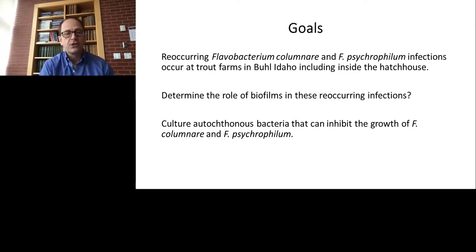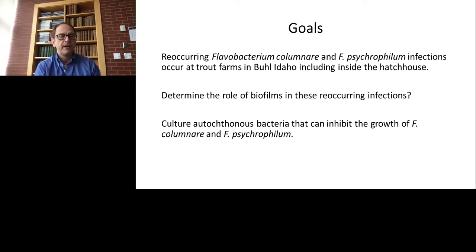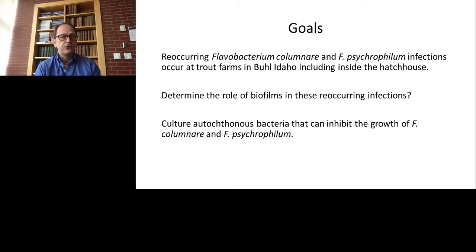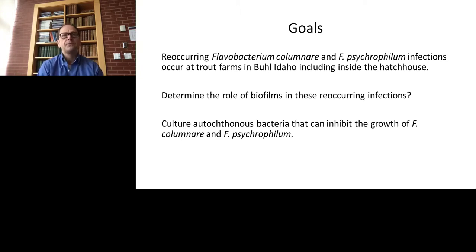The goals of our project are to study these recurring Flavobacterium columnare and Flavobacterium psychrophilum infections that occur in a farm in Idaho, especially inside a hatch house where the young fish that are most susceptible are living and grown, and to determine the role of these biofilms in these recurring infections. We are also interested in culturing autochthonous bacteria — bacteria from the same source — that can inhibit the growth of Flavobacterium columnare and Flavobacterium psychrophilum, so that perhaps we can use them as a probiotic to stop these infections.